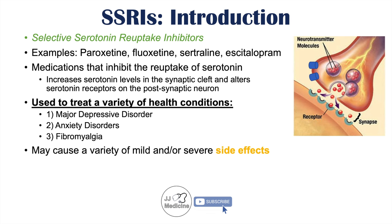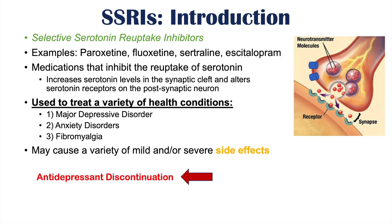The normal use of SSRIs can cause a variety of mild and/or severe side effects. But not only can their normal use cause side effects — if they are stopped too quickly or abruptly, or the dose is reduced too quickly, this can lead to antidepressant discontinuation syndrome. And if SSRIs are used at too high a dose, or other factors cause too high a level within the blood, this can lead to serotonin syndrome. We're going to talk about all of these in this lesson.